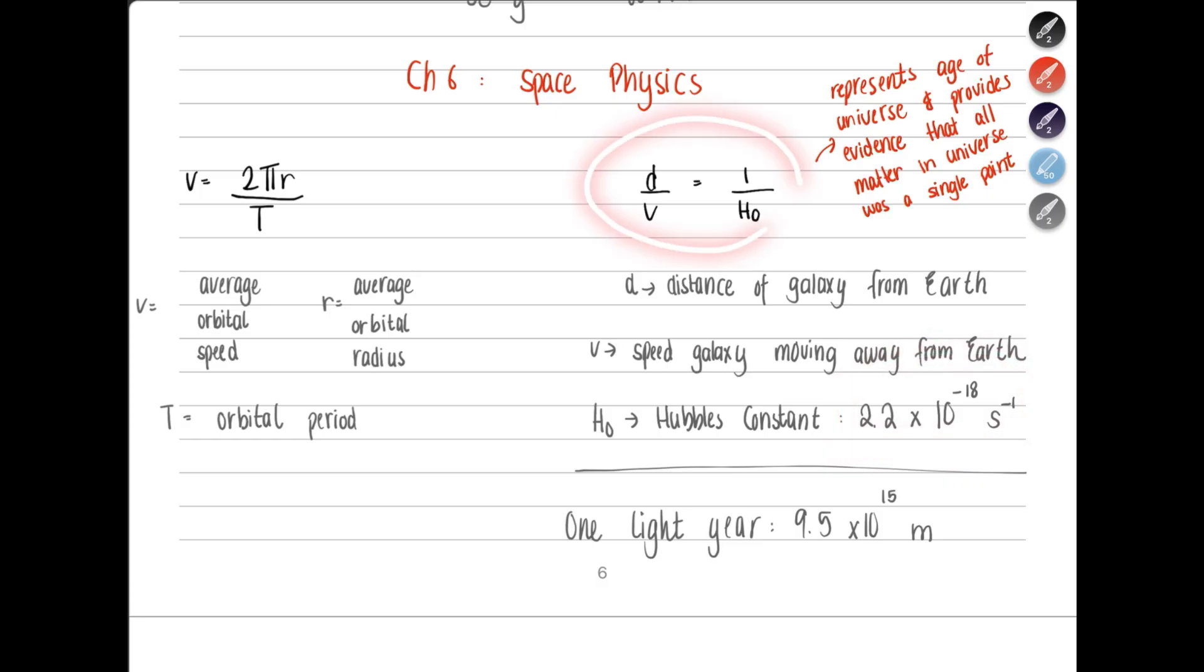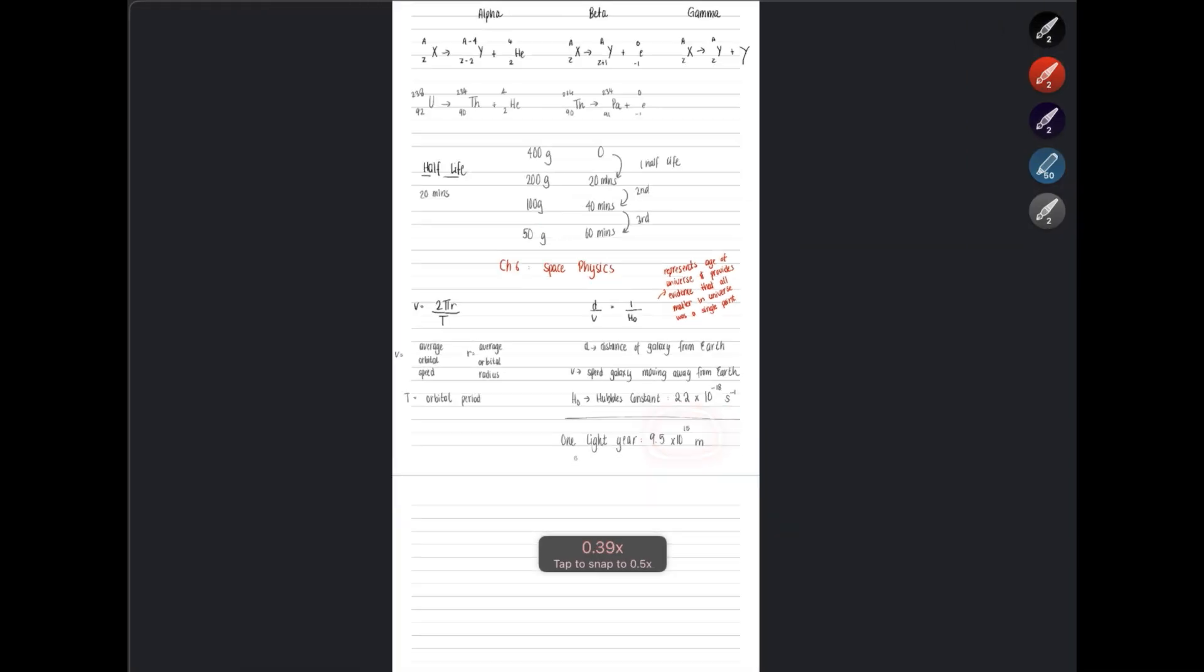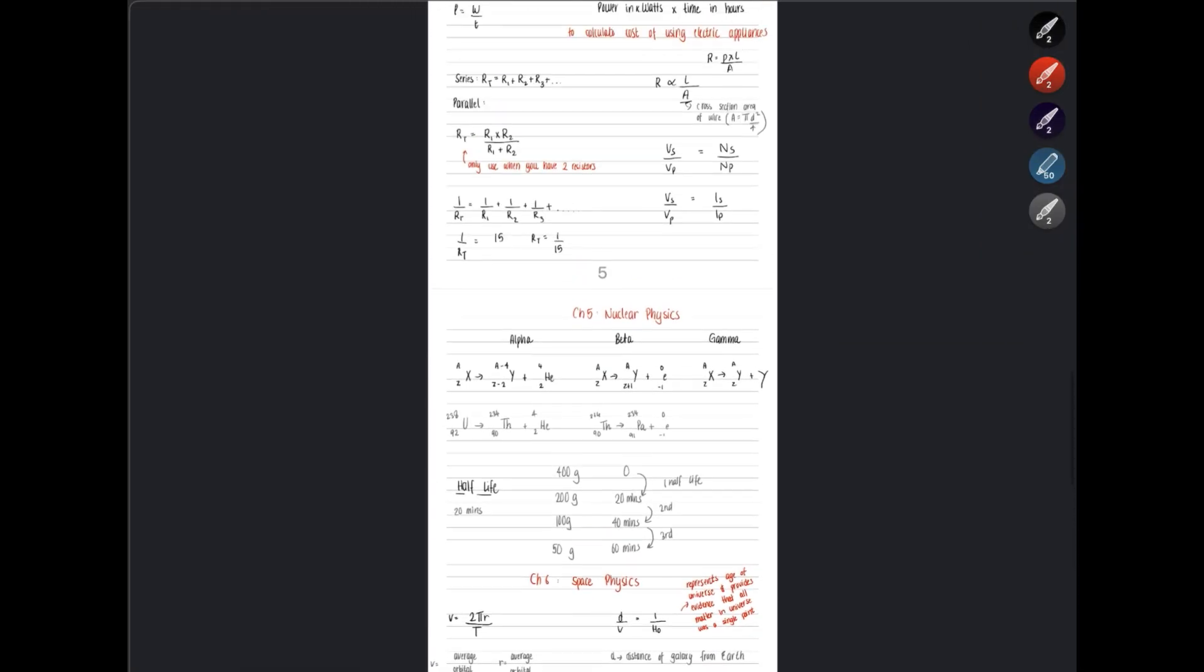This equation represents the age of universe. And it provides us evidence that all of the matter in the universe was initially a single point and it's moving away from us. Then, remember this unit, this quantity, one light year is 9.5 multiplied by 10 power 15 meters. That's important. And that's all.